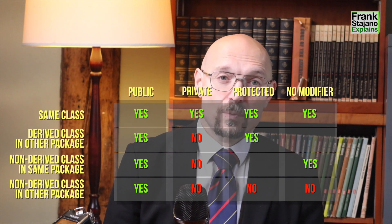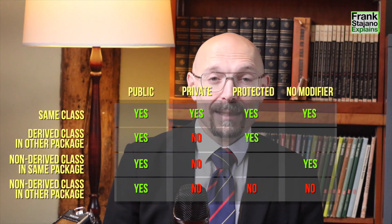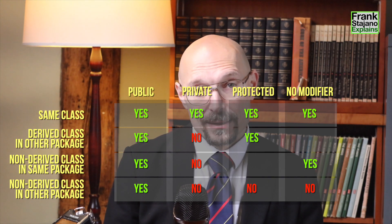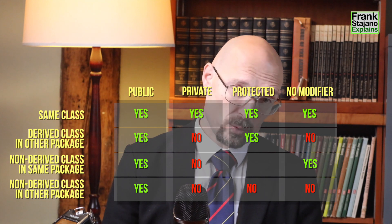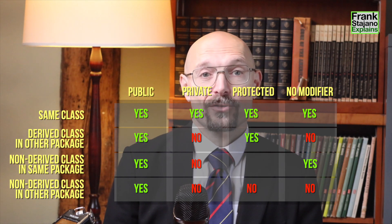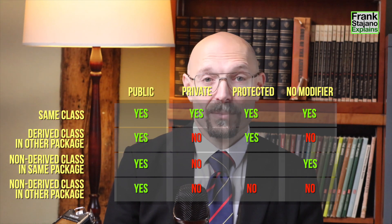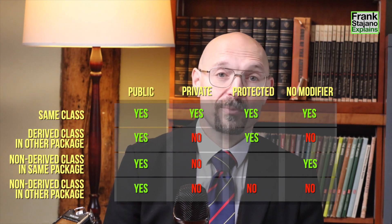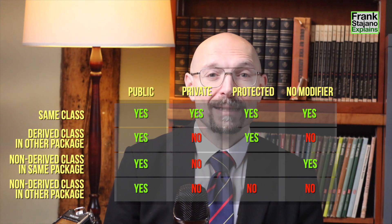Now that's slightly less obvious. When a field is unmarked — meaning it has package access — can it be accessed from a derived class in another package? Well, no. For package access, you must be in the same package. To access it from a derived class in another package, the member would have to be marked protected or public. And most people get this right.